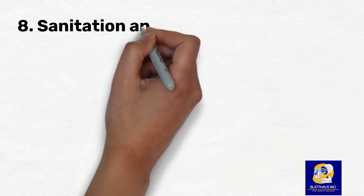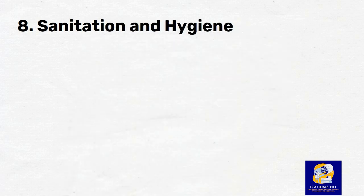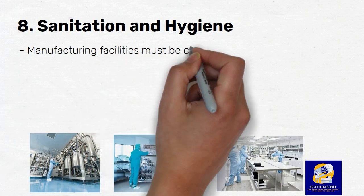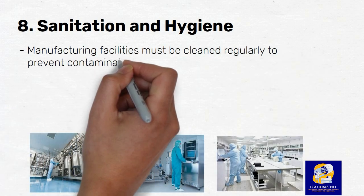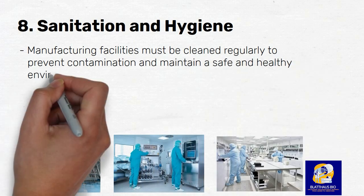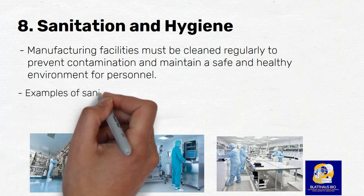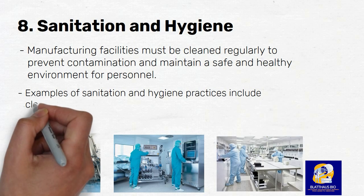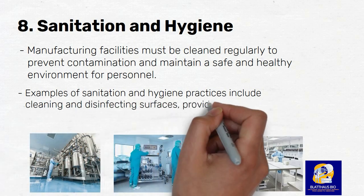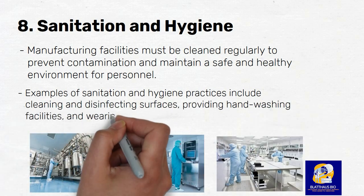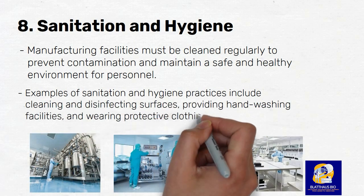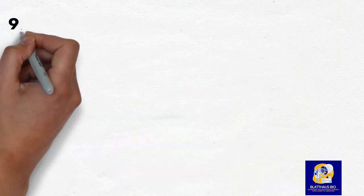Number 8: Sanitation and Hygiene. The eighth principle of GMP is the maintenance of a clean and hygienic manufacturing environment. Manufacturing facilities must be cleaned regularly to prevent contamination and maintain a safe and healthy environment for personnel. Examples of sanitation and hygiene practices include cleaning and disinfecting surfaces, providing hand-washing facilities, and wearing protective clothing.